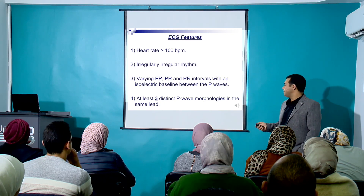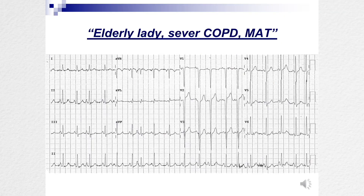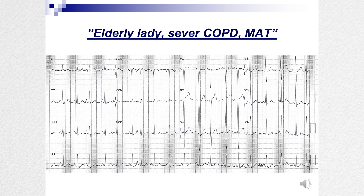Let's have a look at this example. Are we in narrow complex? Yes. Irregularly irregular? Tachycardia? Yes. Now P waves — one shape, different, third, fourth. MAT.